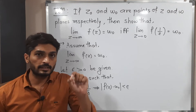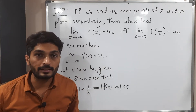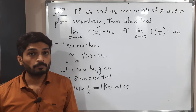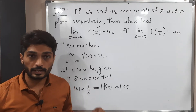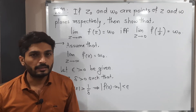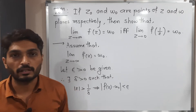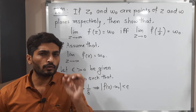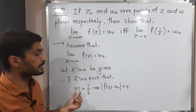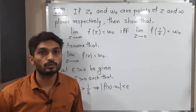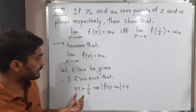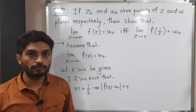When z approaches a particular point z₀, we write 0 less than mod(z minus z₀) less than delta. But here z approaches infinity, so we write mod z greater than 1/delta. Delta is a very small positive real number, and its reciprocal is a very large number — that is why it represents approaching infinity.